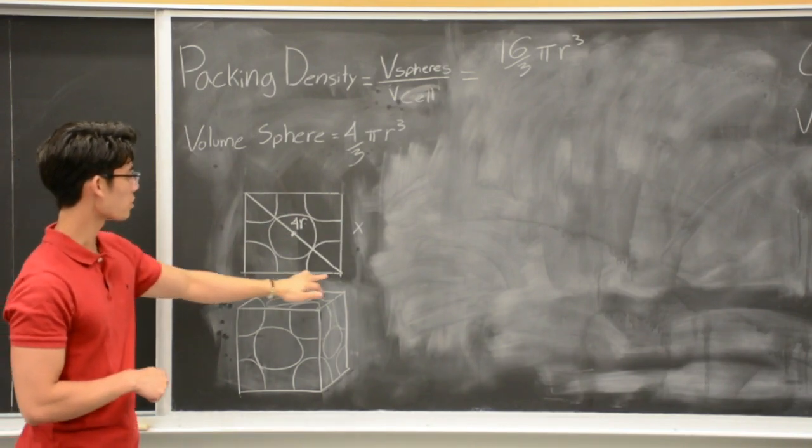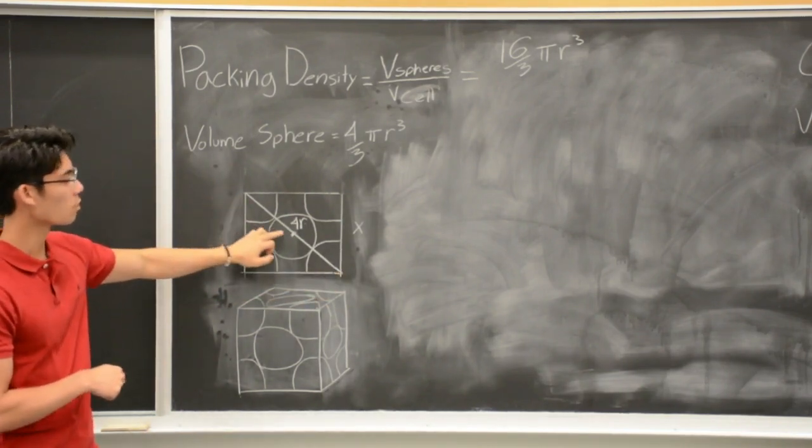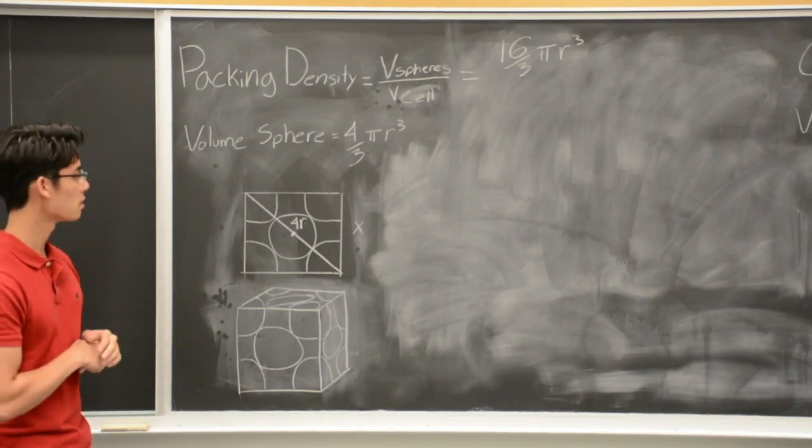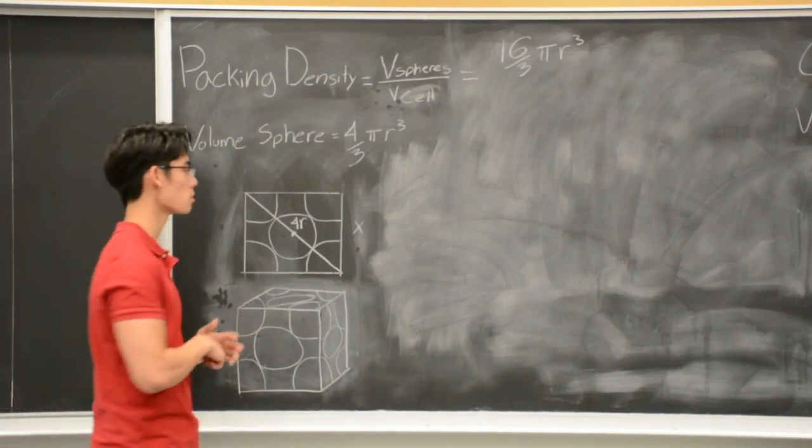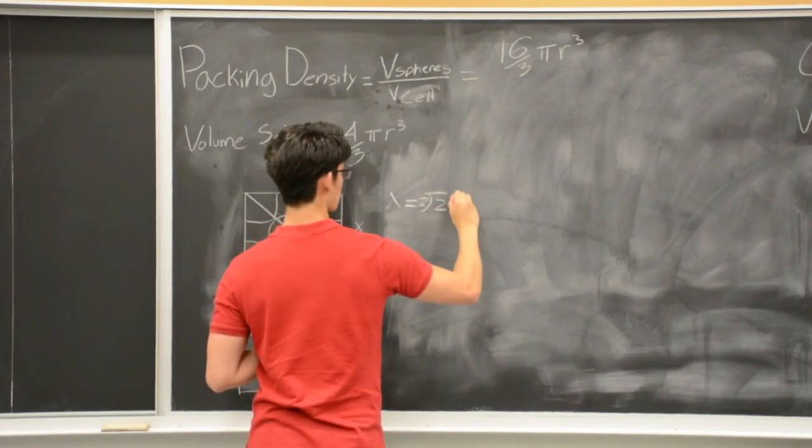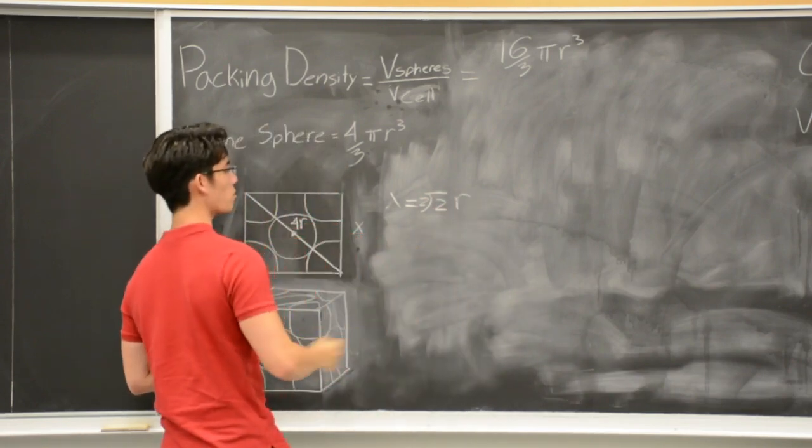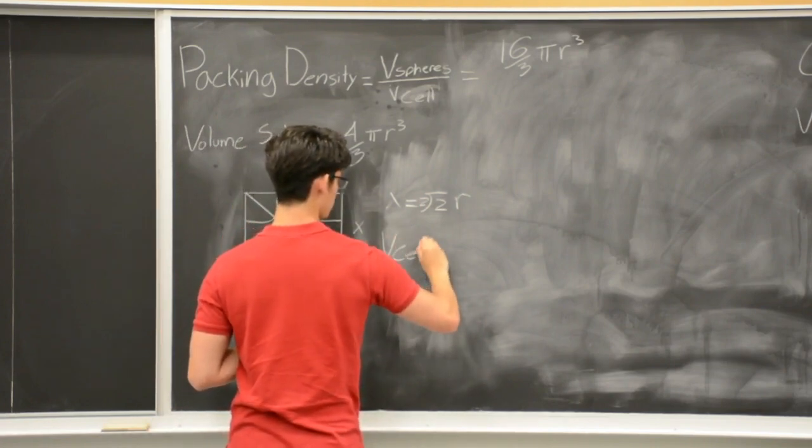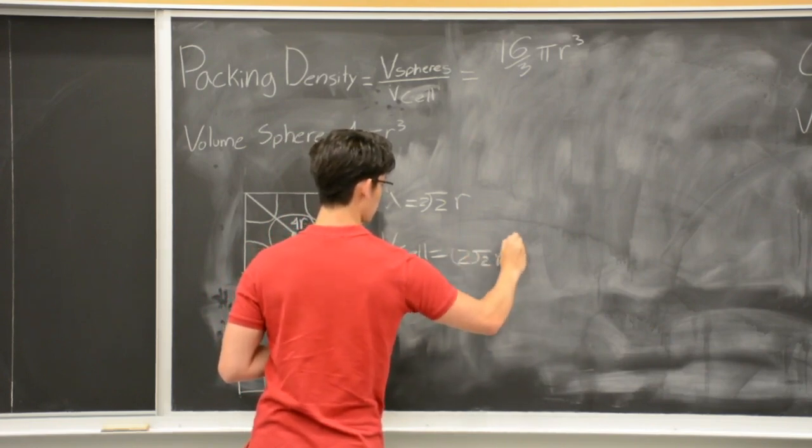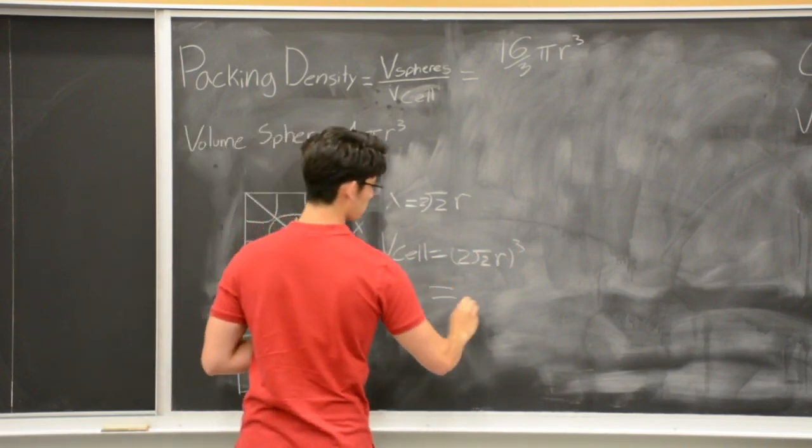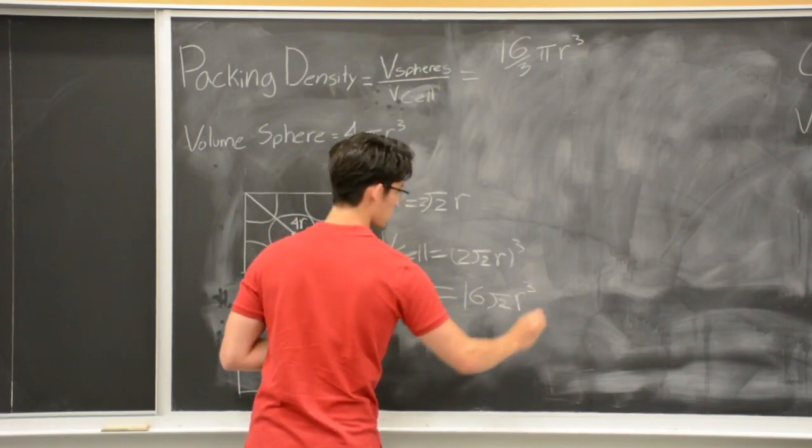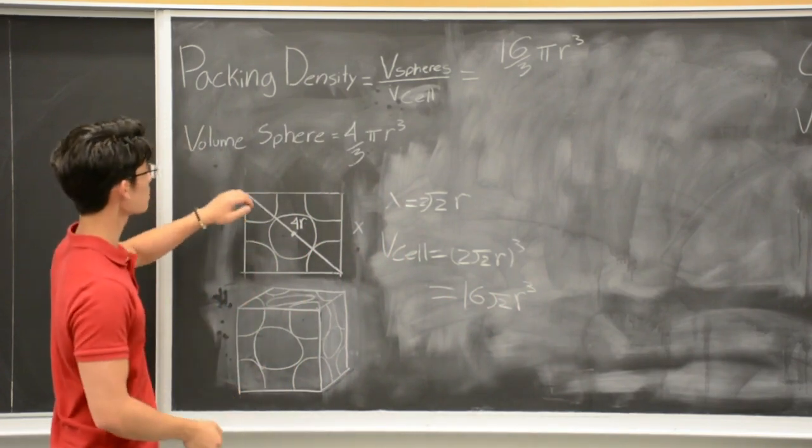Consider this face of the cube, and notice the hypotenuse is equal to 4 times the radius. And let x be the value of the unknown side. By Pythagorean theorem, we can easily solve this, which results in x to be 2√2 times r. And so the volume of the unit cell is 2√2 r cubed, which reduces to 16√2 r cubed. We now have the volume of the spheres and the volume of the unit cell.